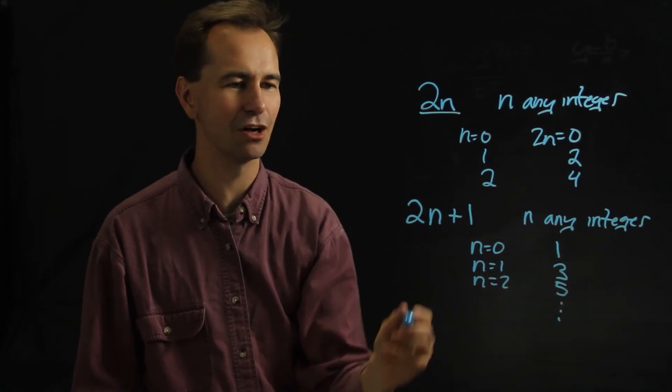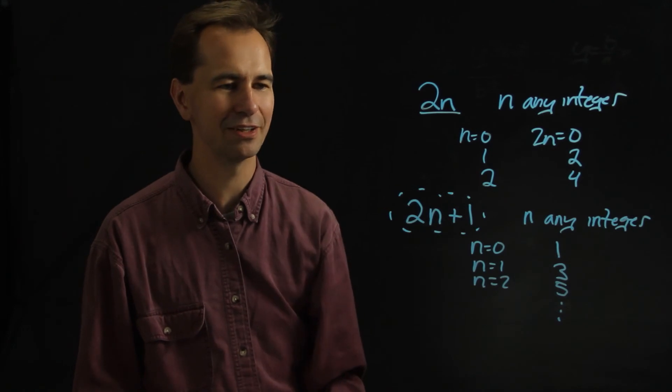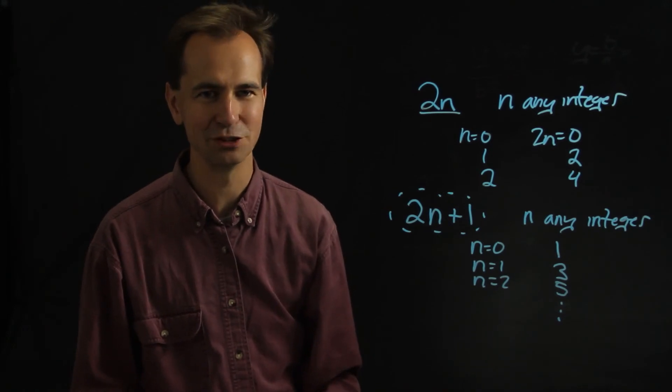So you're always guaranteed to get an odd integer if you use that formula right there, and as long as you make sure that n is an integer of any kind.